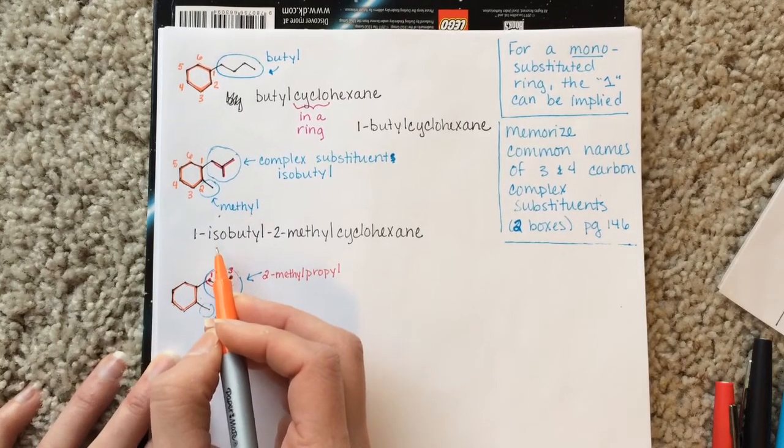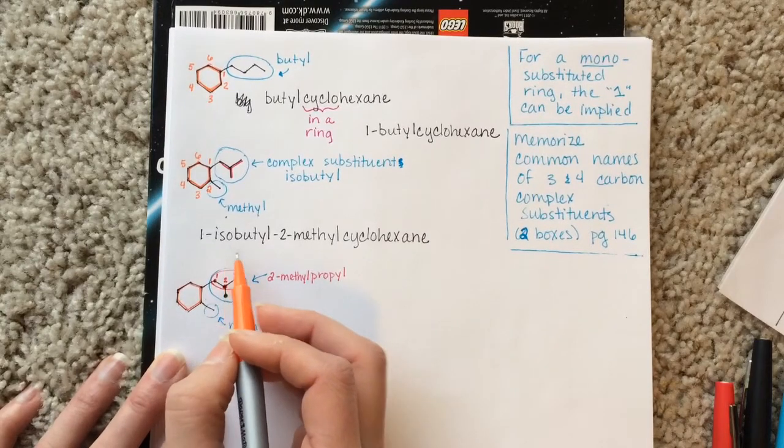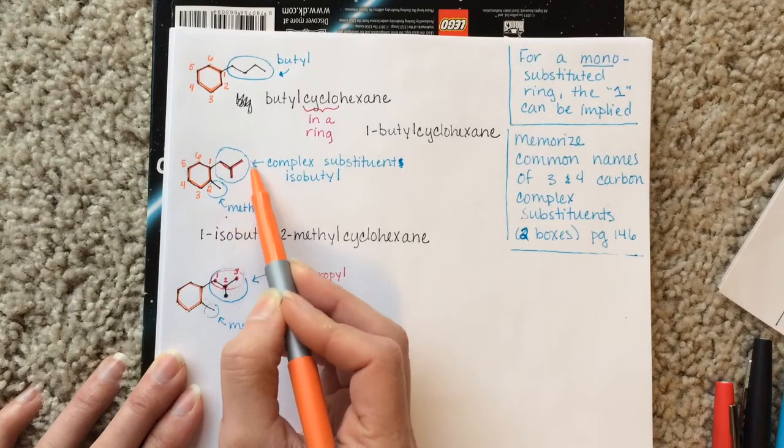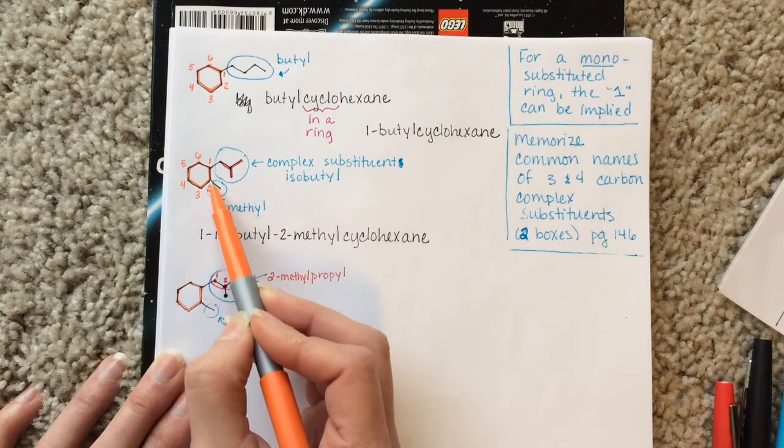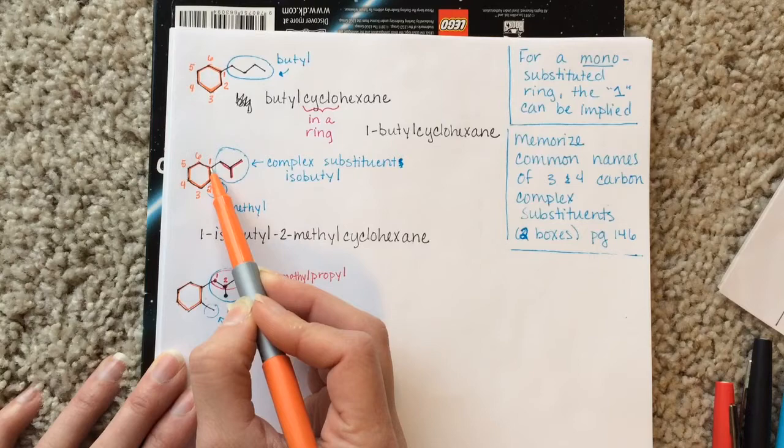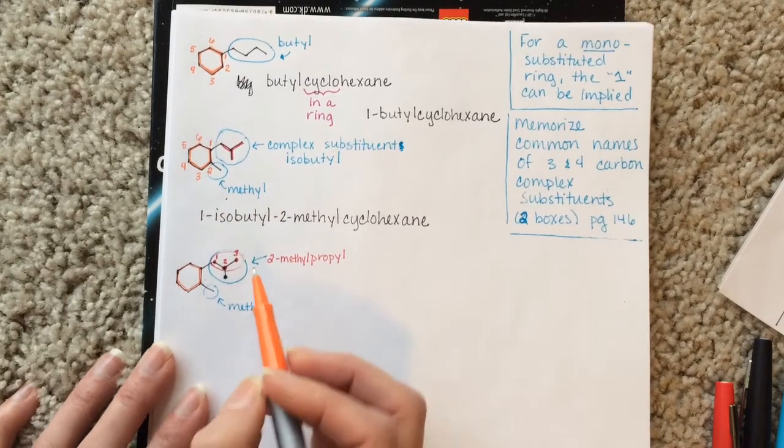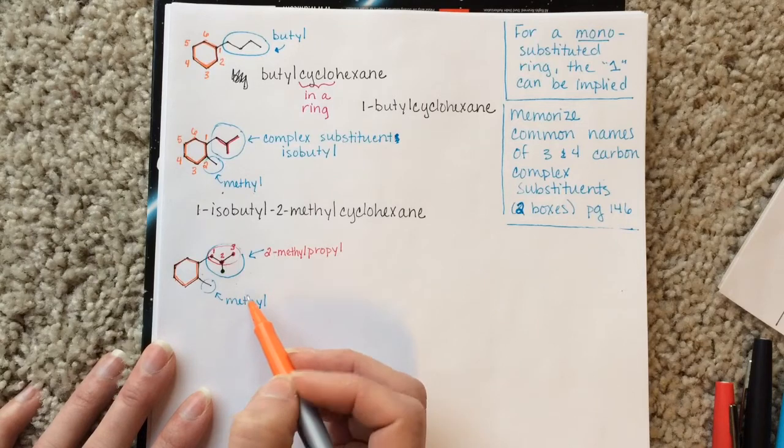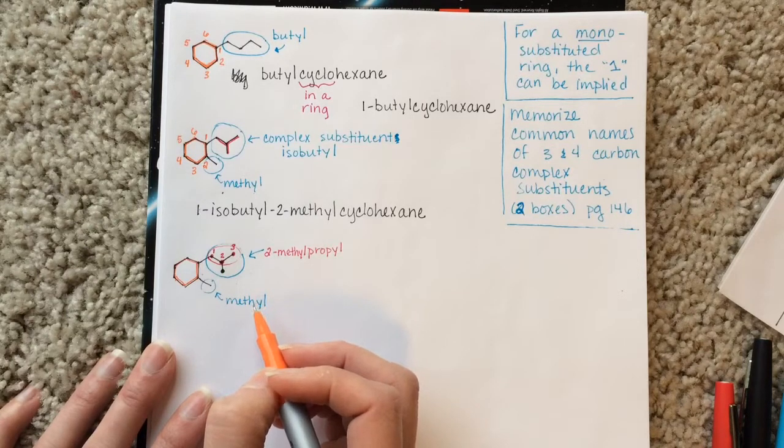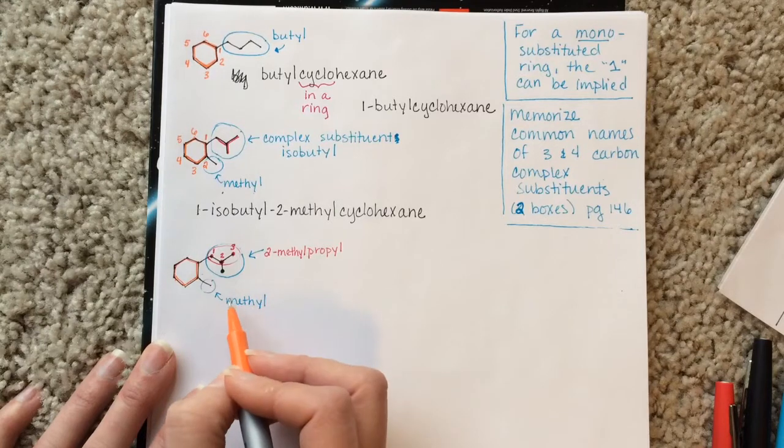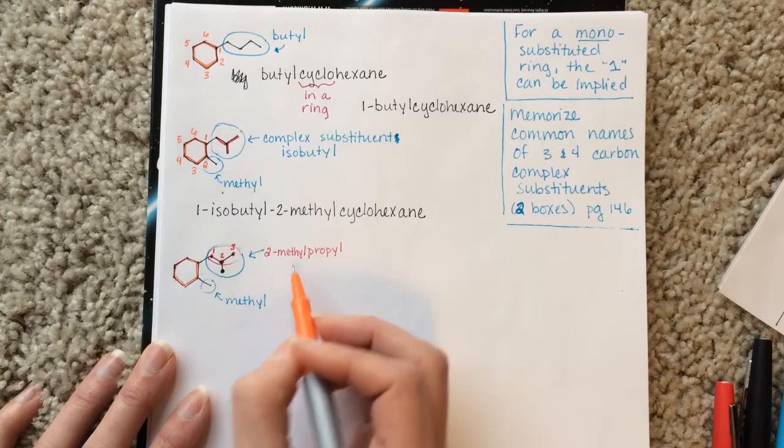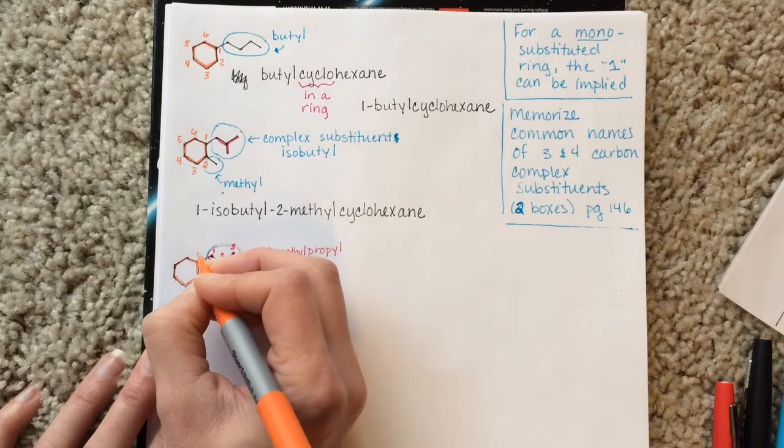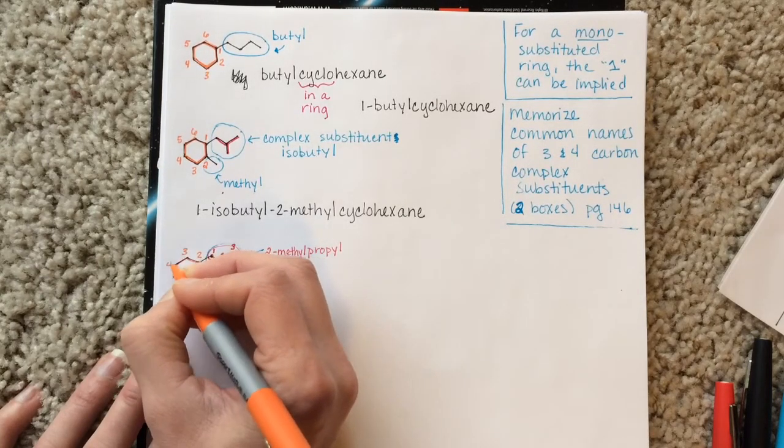In the last example, I told you it was all about the alphabet. So because we were choosing to name this guy as isobutyl, which came alphabetically before methyl, this carbon would be number one, and this would be number two. Down here, we have different names for our substituents. So it's going to change the alphabetization, and it's also going to change the way we number it. Methyl comes alphabetically before methylpropyl, which means that this now is carbon number one, and this is number two, and around the ring we go.